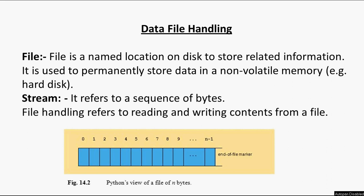Data is erased from the RAM because memory is allocated for variables from the RAM. RAM is not permanent memory — it is a volatile memory. That is why we have come up with the idea of file in Python, because in a file, data can be stored permanently on disk, for example, a hard disk.